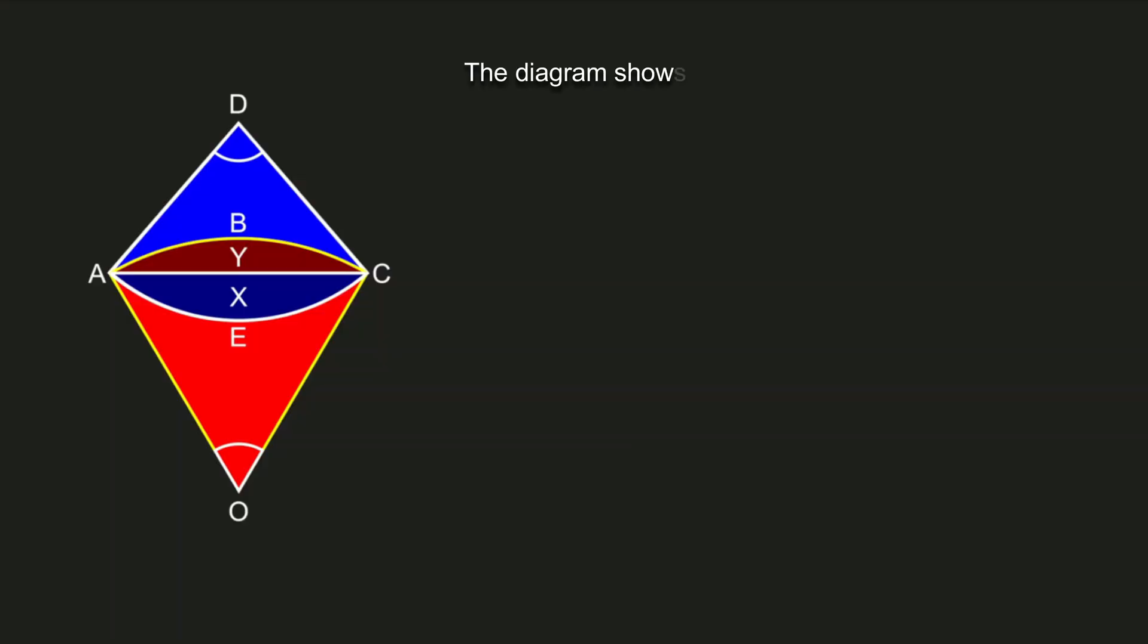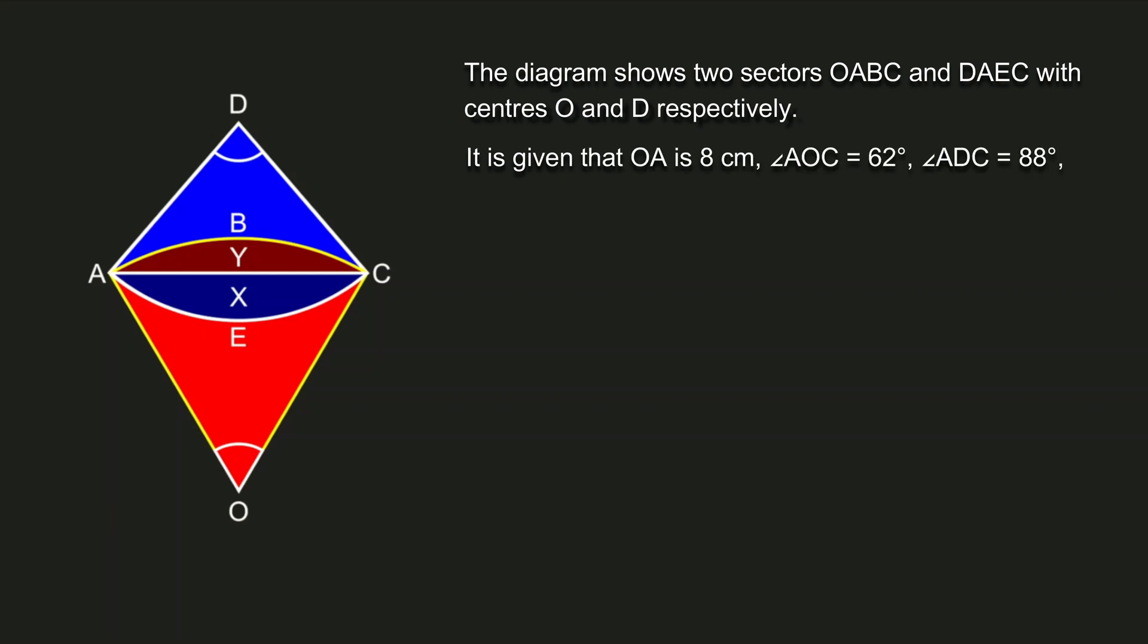Let's get to the question. The diagram shows two sectors OABC and DAEC with centers O and D respectively. It is given that OA is 8 centimeters, angle AOC is 62 degrees, angle ADC is 88 degrees, and the length of arc AEC is 9.111 centimeters. This question requires us to use π = 3.142.